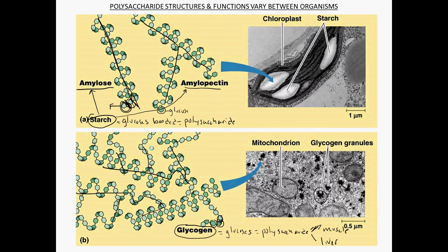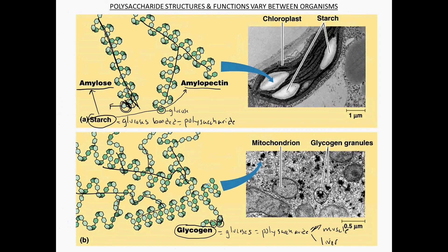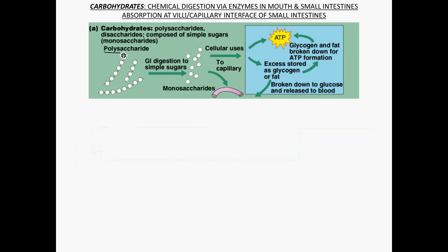Going back to the beginning, your monosaccharides — glucose, galactose, and fructose — are the things that get absorbed into the bloodstream and travel to the cells. Once in the cell, any excess not used is going to be stored as glycogen or fat, so these are energy storage molecules.